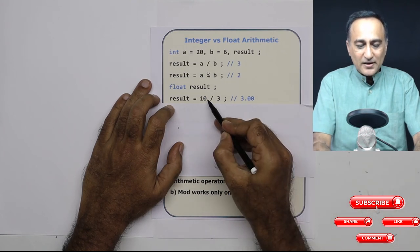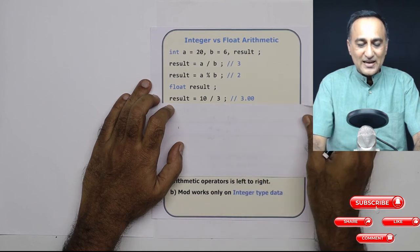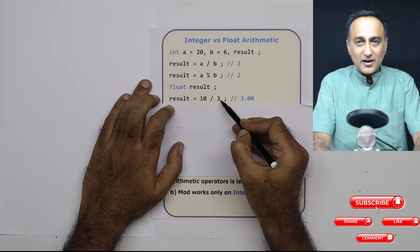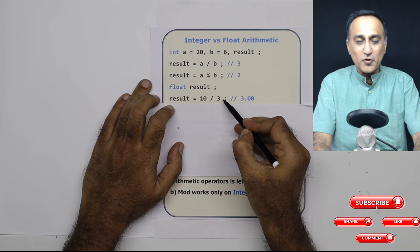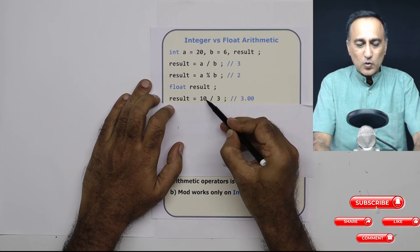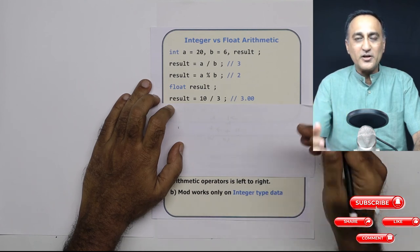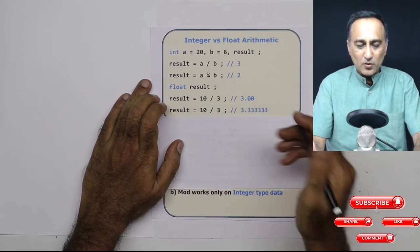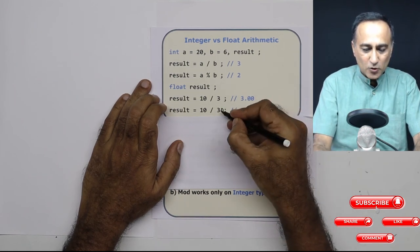Now suppose I wanted accurate results, I wanted a real number output, then what I can do is, either I can make both of them real numbers by making this as 10.0 and making this also as 3.0, or just make one of them as real numbers, then the other one is automatically converted into a float or a real number and then the division is performed. So here, this is 3.0.